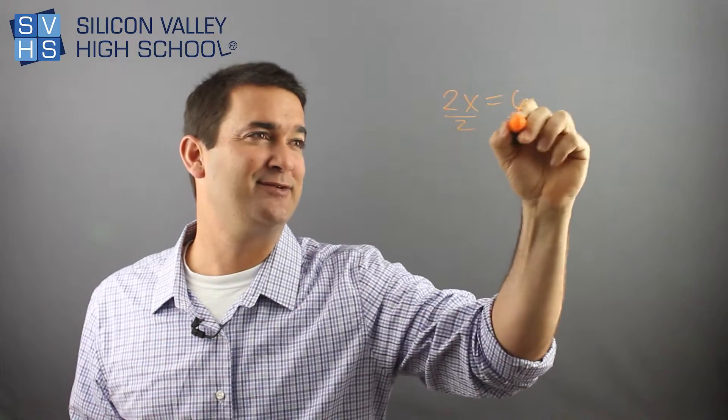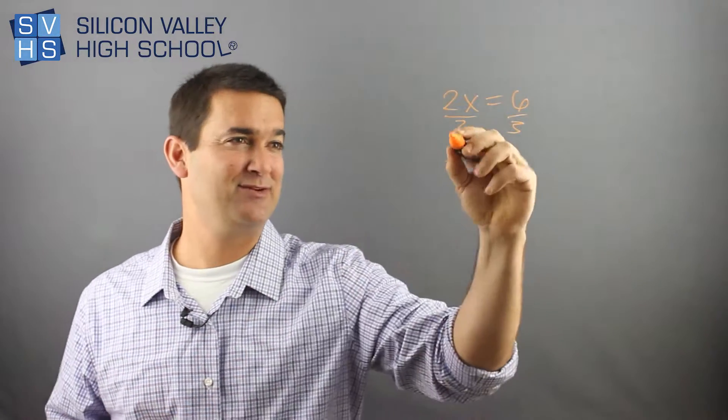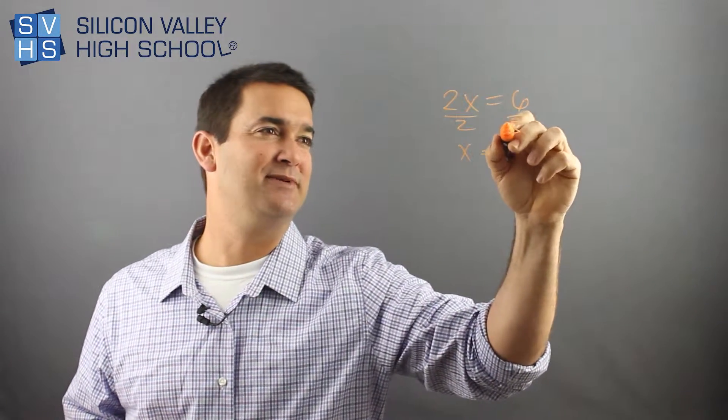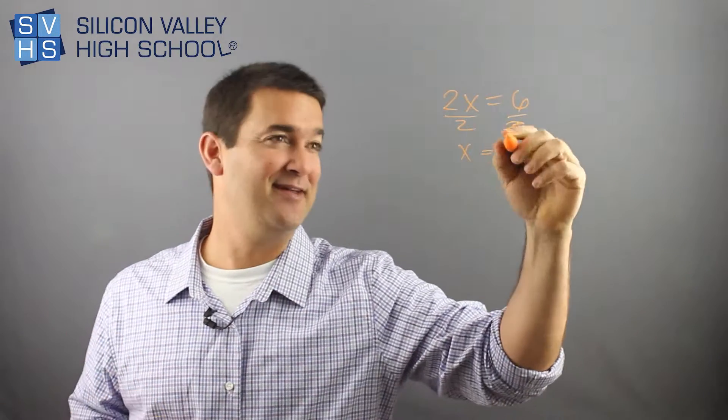You would just divide both sides by 2, everyone's happy, totally easy, right? And your answer would be x equals—excuse me, divide both sides by 2 and then your answer is 3.